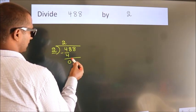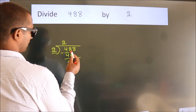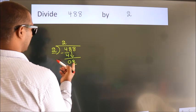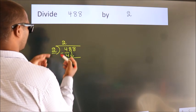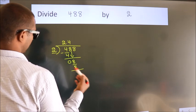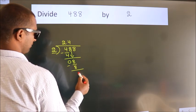After this, bring down the beside number. So, 8 down. So, 8. When do we get 8? In 2 table. 2 4's, 8. Now, we subtract. We get 0.